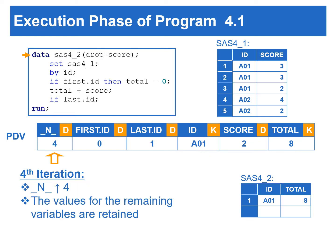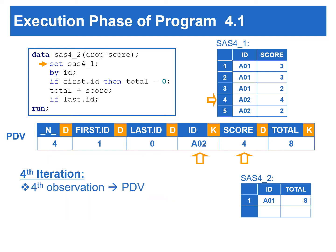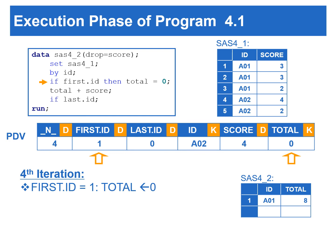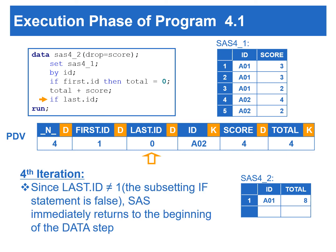At the beginning of the fourth iteration, _N_ is incremented to 4 and the rest of the variables are retained. The set statement copies the fourth observation from the input data to the PDV. Since this is the first observation for A02, first.id is set to 1. But this is not the last observation for A02, so last.id is set to 0. Since first.id equals 1, which is true, total is set to 0. This is a very important step — without initializing total to 0 when reading the first observation for each person, total would accumulate the values from the previous subject. Since last.id does not equal 1 in the subsetting IF statement, SAS immediately returns to the beginning of the data step.